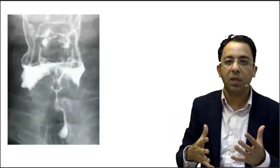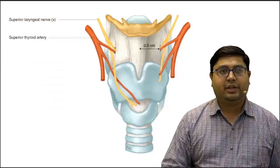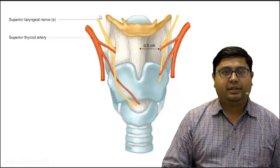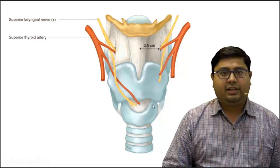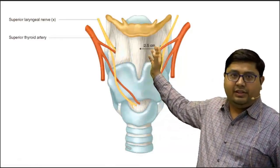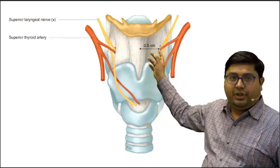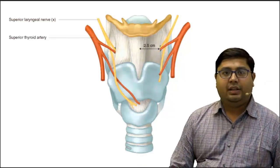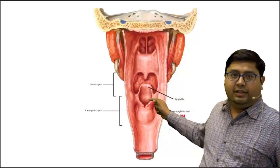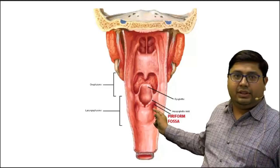Thank you for enlightening us with the radiological pictures. Now let's look at the gross anatomy. Here we have the hyoid bone, thyroid cartilage, and cricoid cartilage — the skeleton of the larynx. We can see the superior laryngeal nerve coming in and dividing into the internal laryngeal and external laryngeal nerves. The internal laryngeal nerve actually pierces the thyrohyoid membrane. In this section, we can see the epiglottis and the aryepiglottic fold, and lateral to this fold is the piriform fossa or piriform recess.